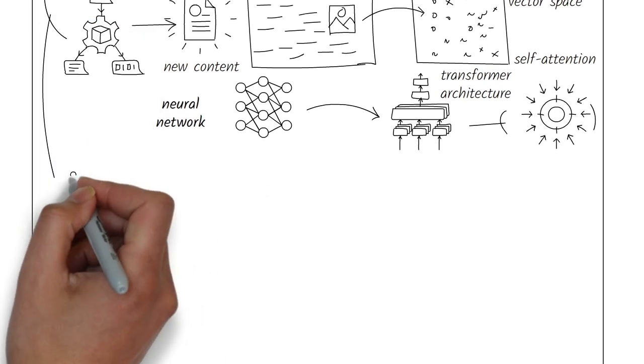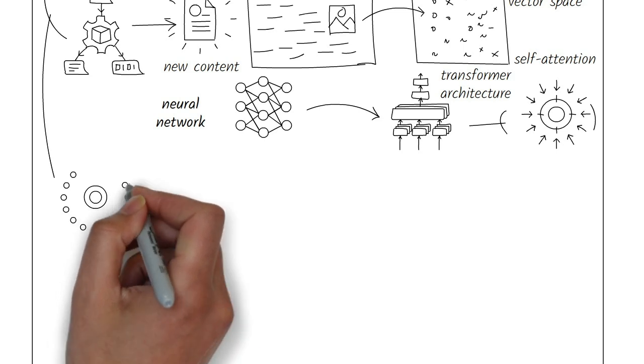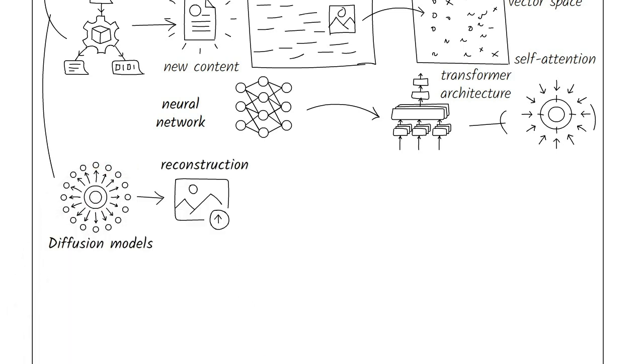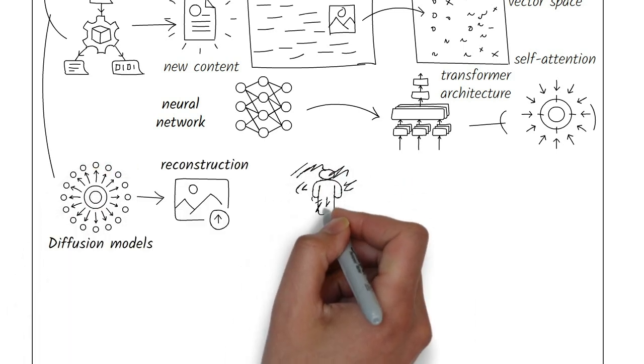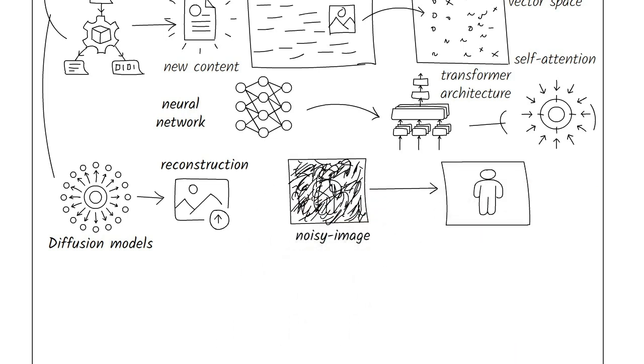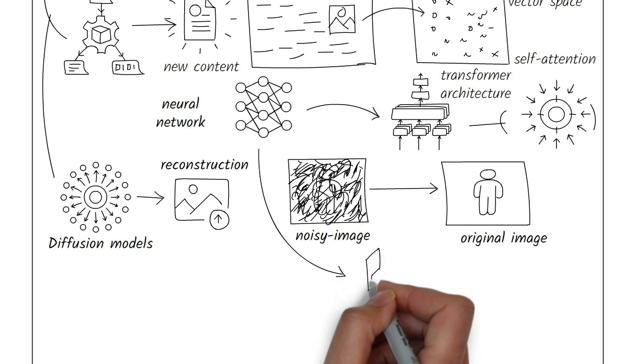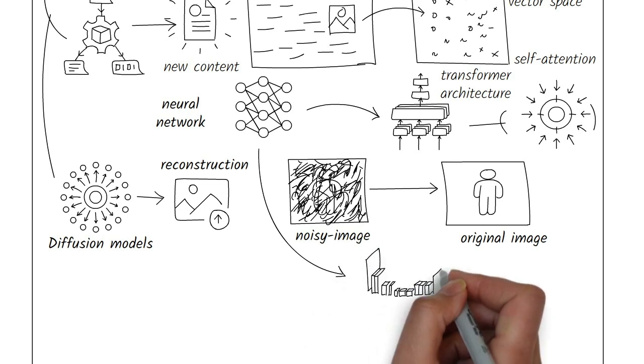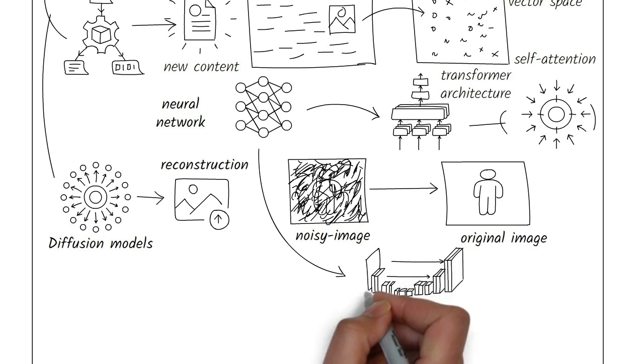Diffusion models create images by starting with some random noise and refining it step-by-step. They work by gradually reversing a process that initially adds noise to an image, training the model to reconstruct the original image from the noisy version. This is achieved through deep learning networks, typically using UNet architectures, which learn to predict and remove noise at each step, ultimately generating high-quality realistic images.